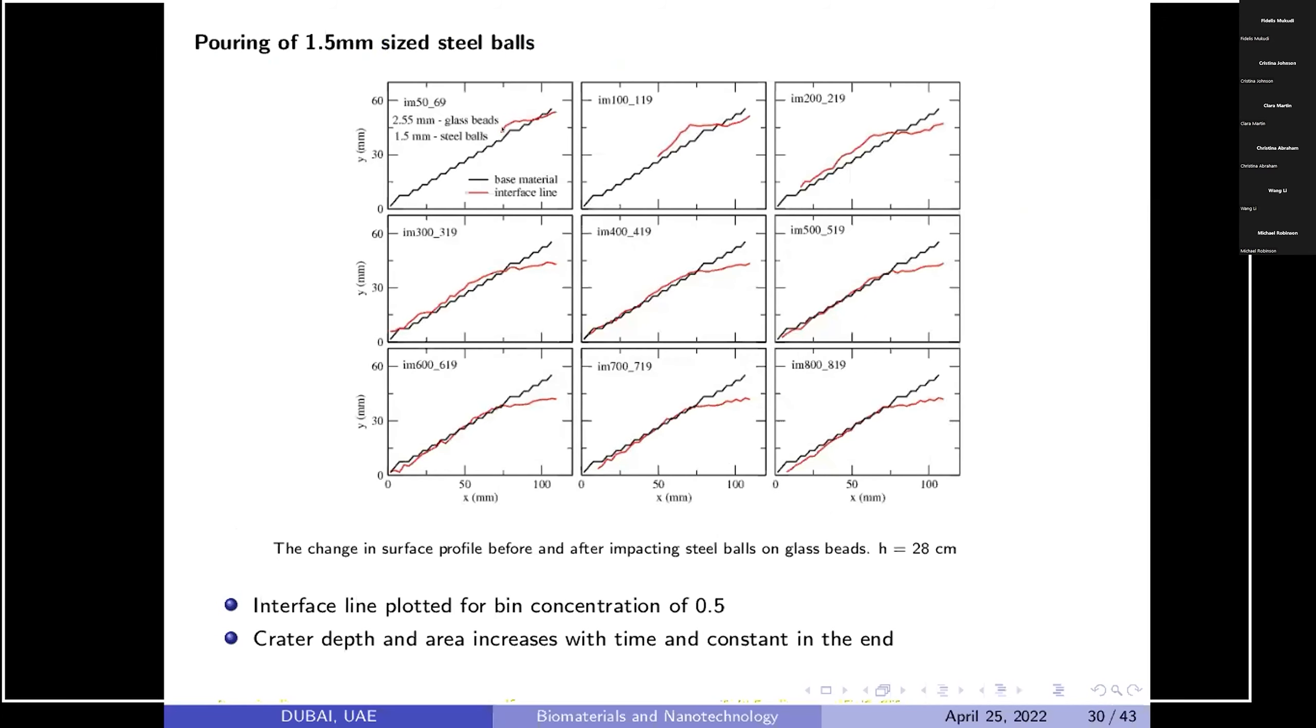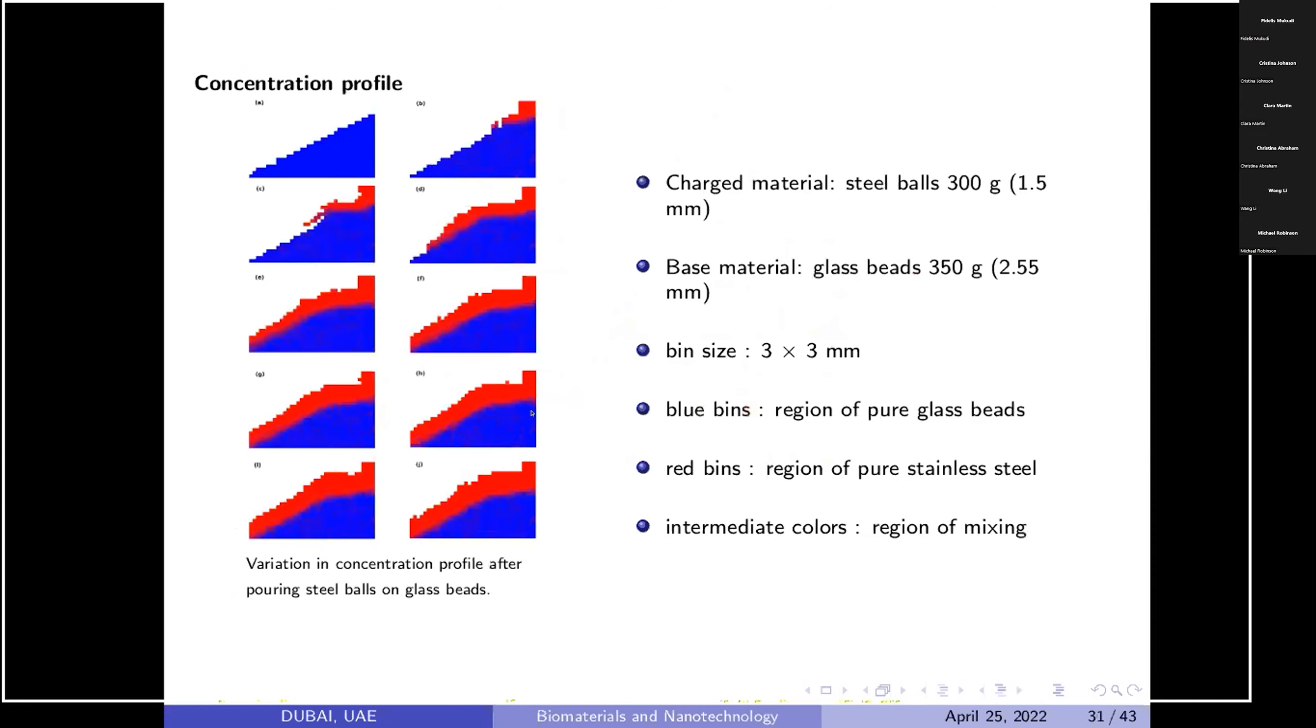Similar kind of experiment has been performed. Initially, the bed of glass beads was prepared and you can see the dark shade is measured as coke collapse. The dark line indicates the baseline. The baseline in all the images are same and the red line indicates the line of large density material that is steel ball. You can see as time increases, the crater formations change. This will give a better idea to get more depth detail. We have prepared a bin size of 3 mm by 3 mm. As I already mentioned, initially there was glass beads which is red, and as we pour the large density material, the red part indicates the density. The intermediate region color is the region of mixing.